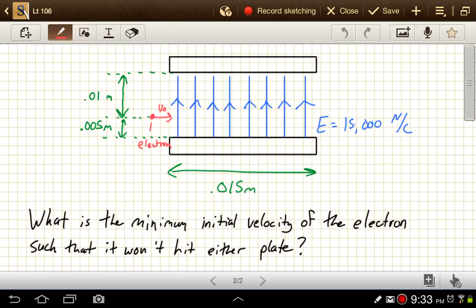Remember electric field shows the force that would act on a small positive test charge. So we want our electron, our electron then is going to feel a force downward. And so it's going to curve downward. And so we want it to have a path that looks something like this. So it just misses this edge right here.